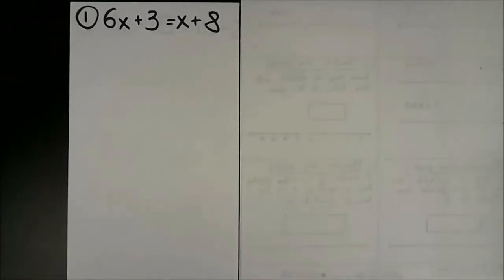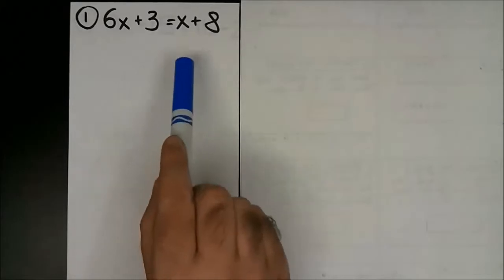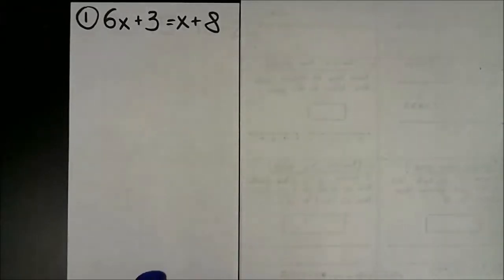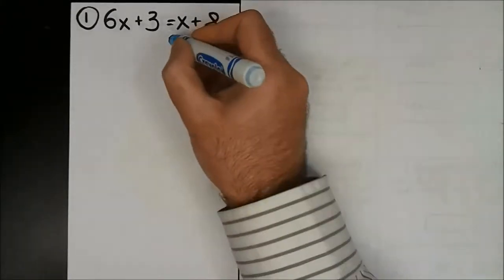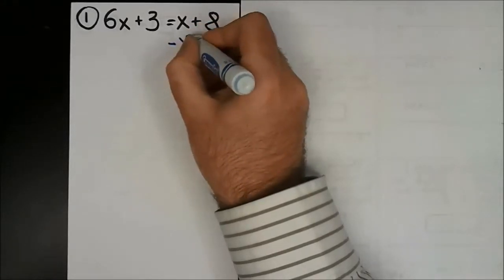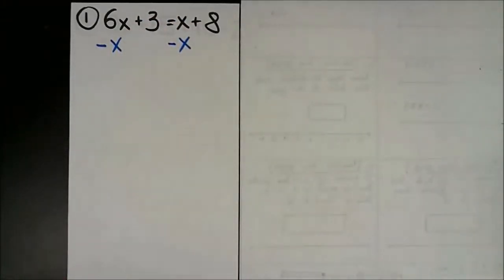Number one is a pretty simple problem with a variable on each side of the equation. You have a variable on the left side, a variable on the right side, and you want the variable on only one side. So you want to get rid of 6x or x — either is correct. I prefer to get rid of the smaller variable. Get rid of the x, and you do that by subtracting x. You've got to do it from both sides. I go with the smaller variable because it just makes the problem easier in my experience.